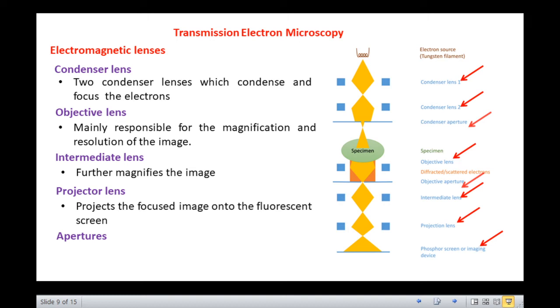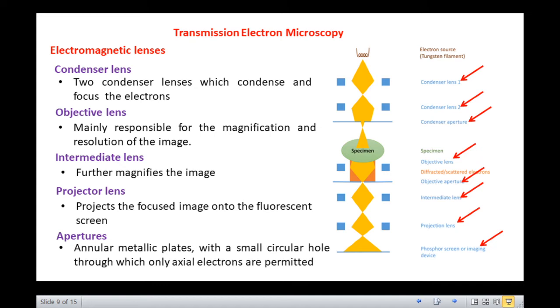These are annular metallic plates with a small circular hole through which only axial electrons are permitted. This permission of axial or central electrons decreases the beam intensity and also removes electrons that are scattered to high angles due to aberrations.